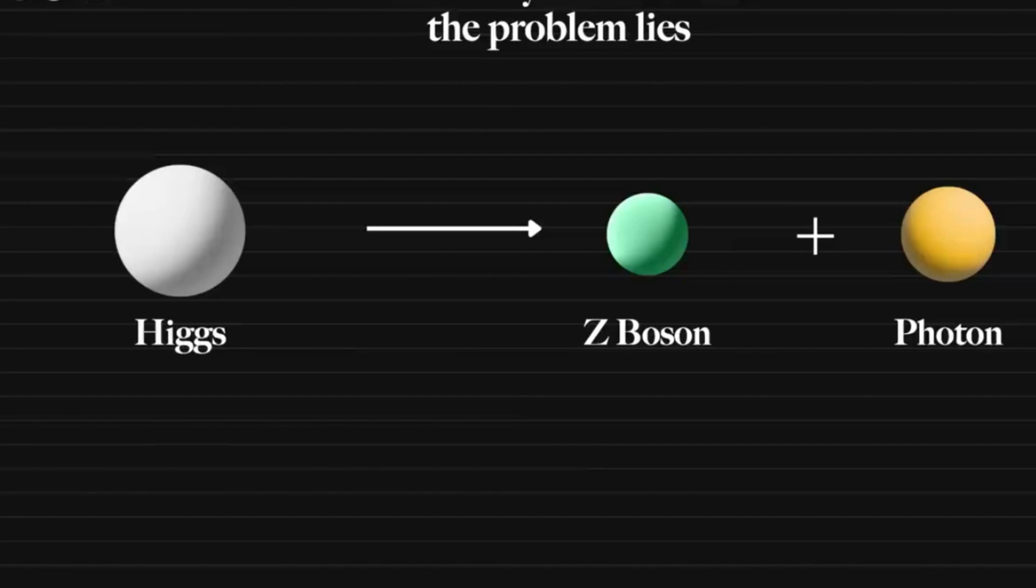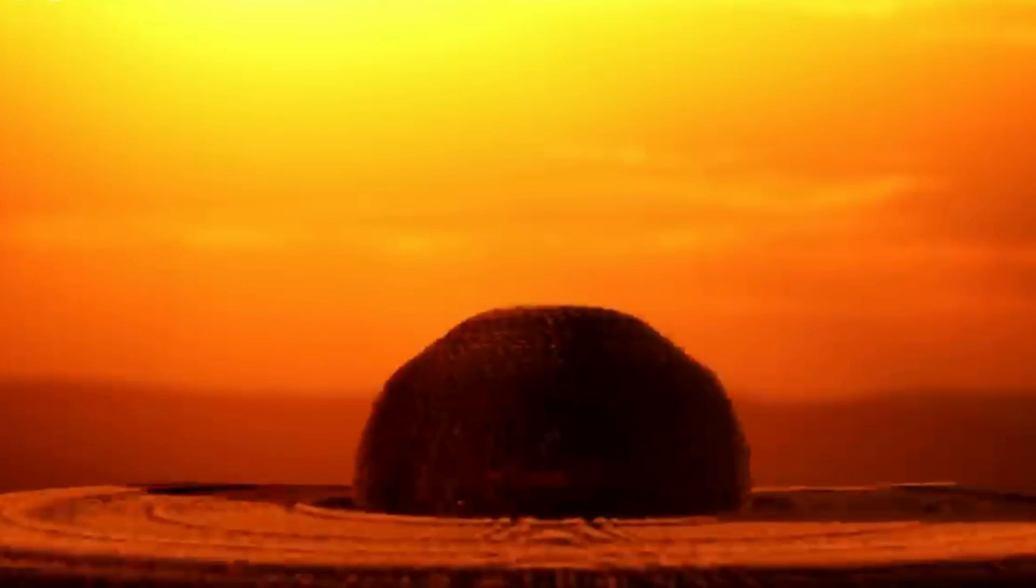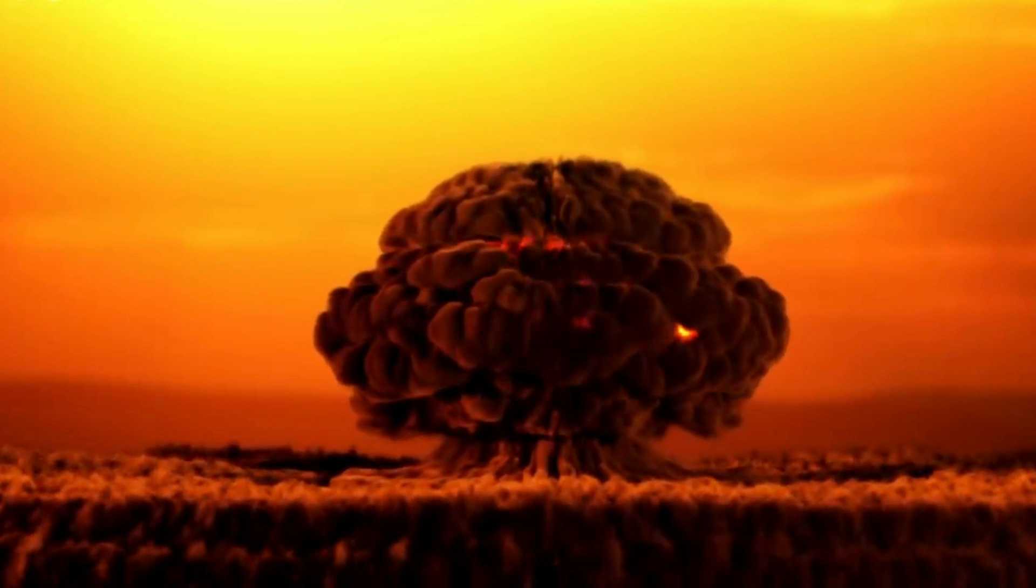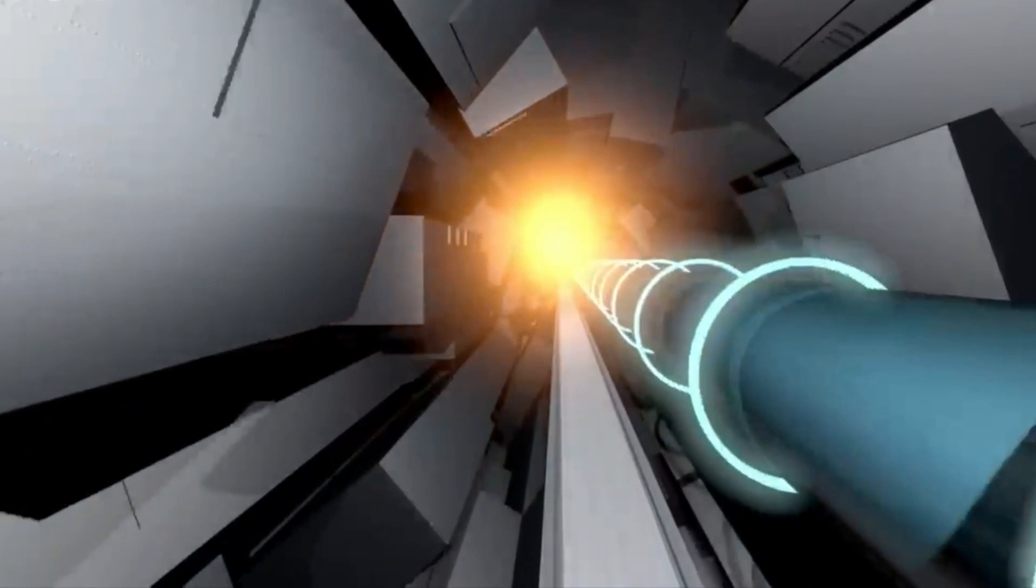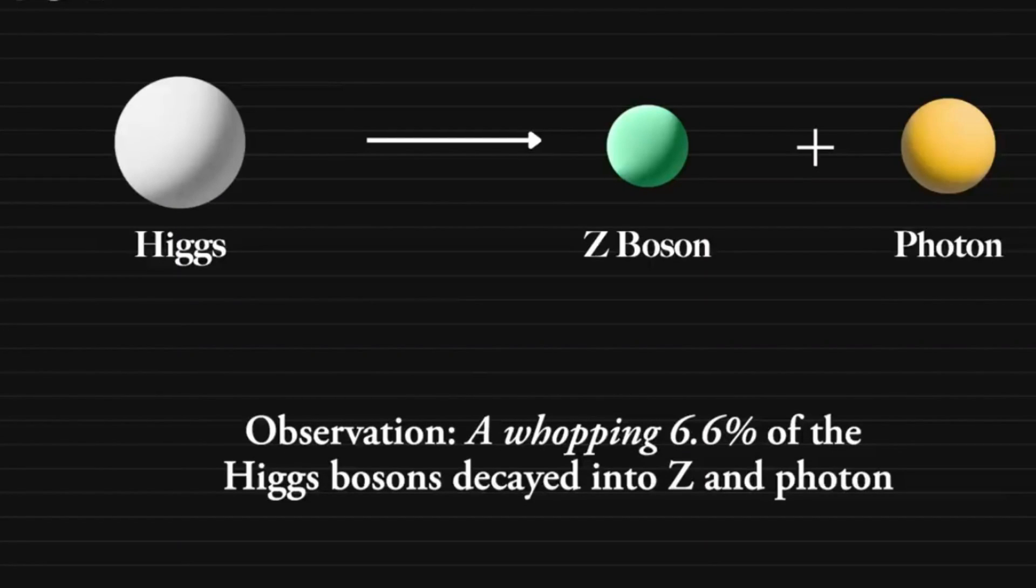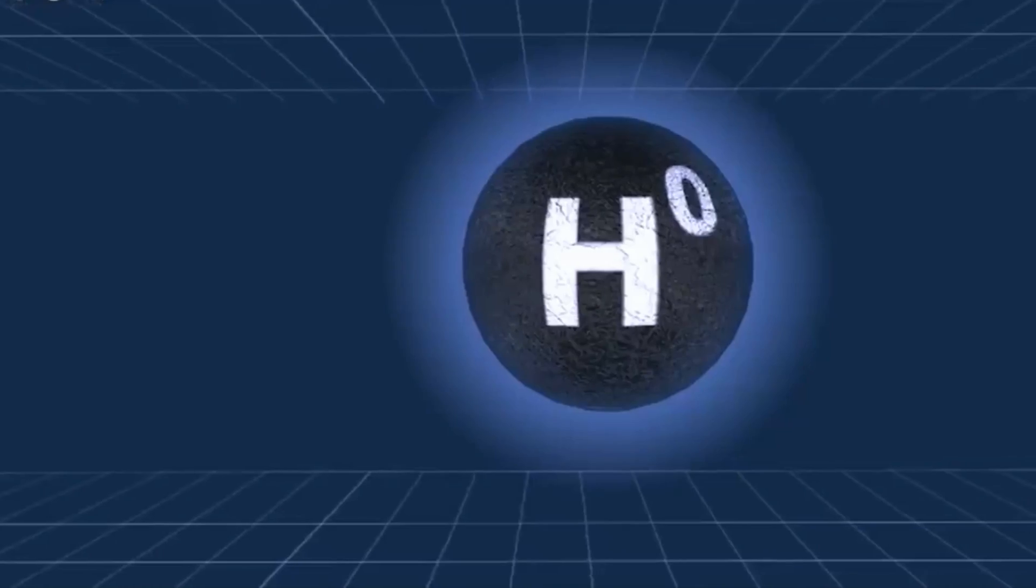And now, drumroll, please, brace yourselves for the unexpected twist in our cosmic tale. In the Atlas and CMS experiments, scientists were in for a jaw-dropping surprise. It turns out, the Higgs boson isn't following the cosmic rulebook. Instead of decaying into a Z boson and a photon as predicted, it's doing it a whopping 6.6% of the time. Cosmic curveball alert.